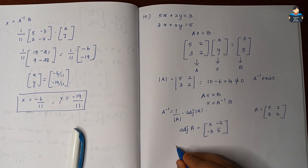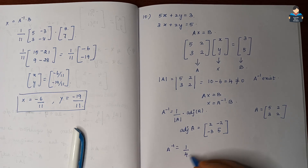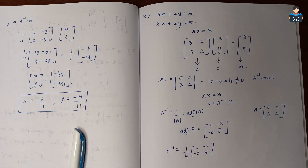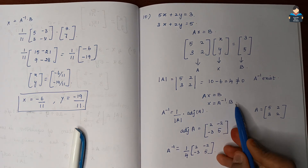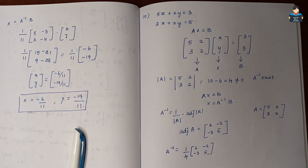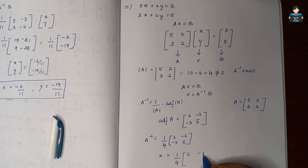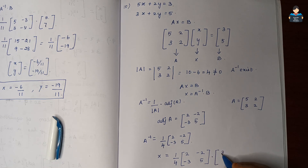Substituting into A-inverse: A-inverse equals 1/4 into [2, -2; -3, 5]. Now we compute X = A-inverse × B, which is 1/4 into [2, -2; -3, 5] multiplied by B = [3; 5].